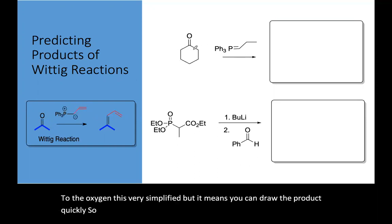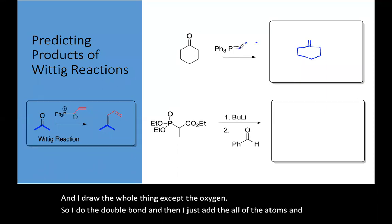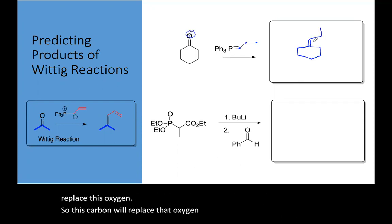So I redraw my electrophile and I draw the whole thing except the oxygen. So I do the double bond and then I just add all of the atoms and I make sure I'm adding the carbon that was bonded to the phosphorus and it will replace this oxygen. So this carbon will replace that oxygen and we form this product. These three carbons were added.